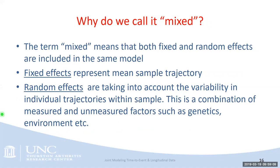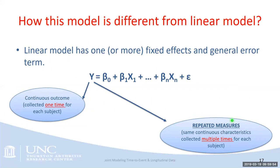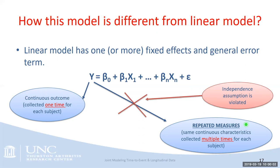The term 'mixed' means we have both fixed and random effects in the same model. Fixed effects represent mean sample trajectories, while random effects account for variability introduced by individual trajectories within the sample. In a standard linear model, a continuous outcome is collected one time per subject. Once you begin repeating measures on the same subject, your assumption of independence between observations is violated and you must use more advanced methods that account for correlation.